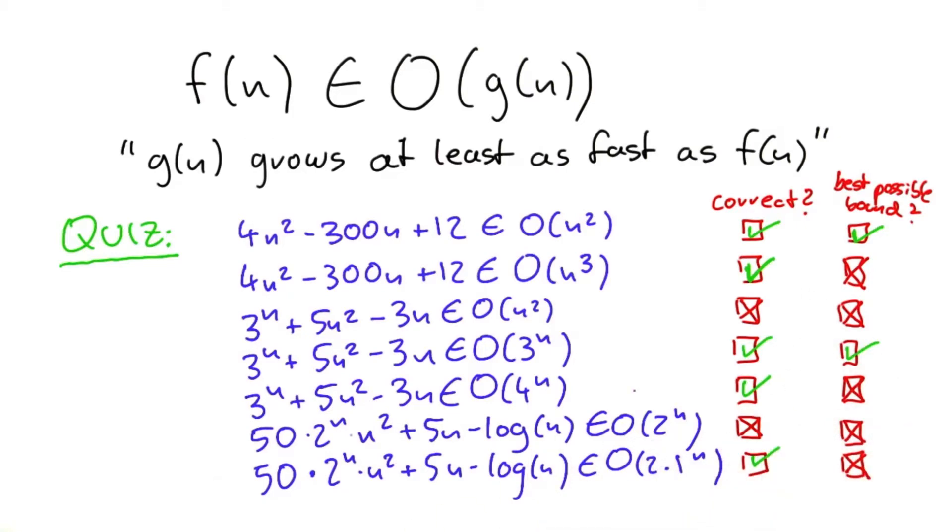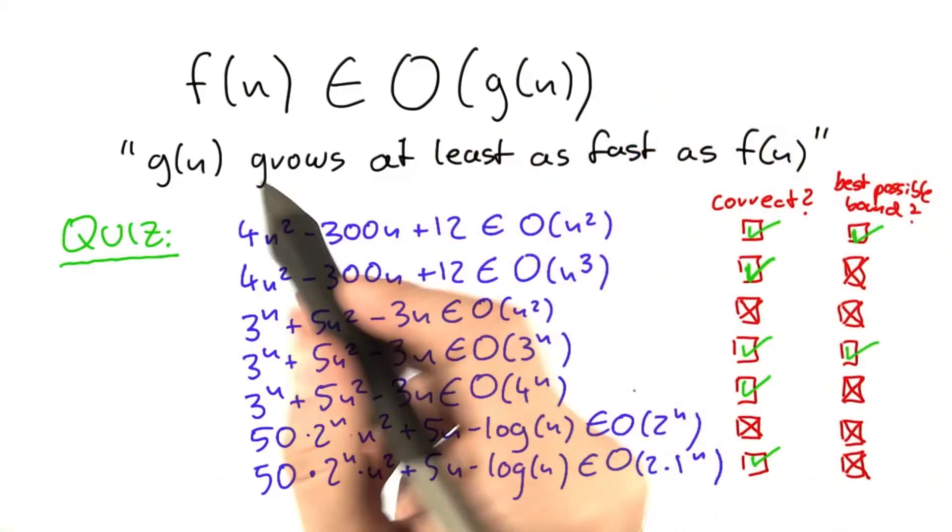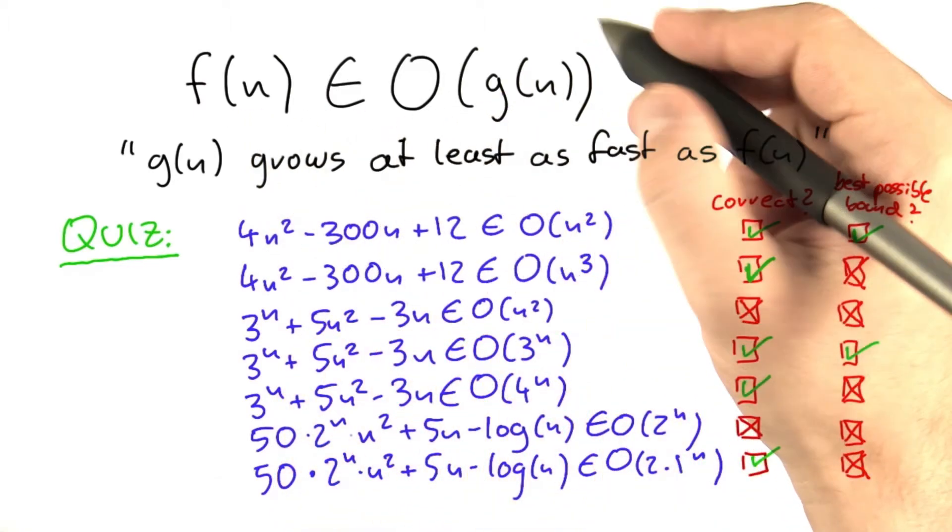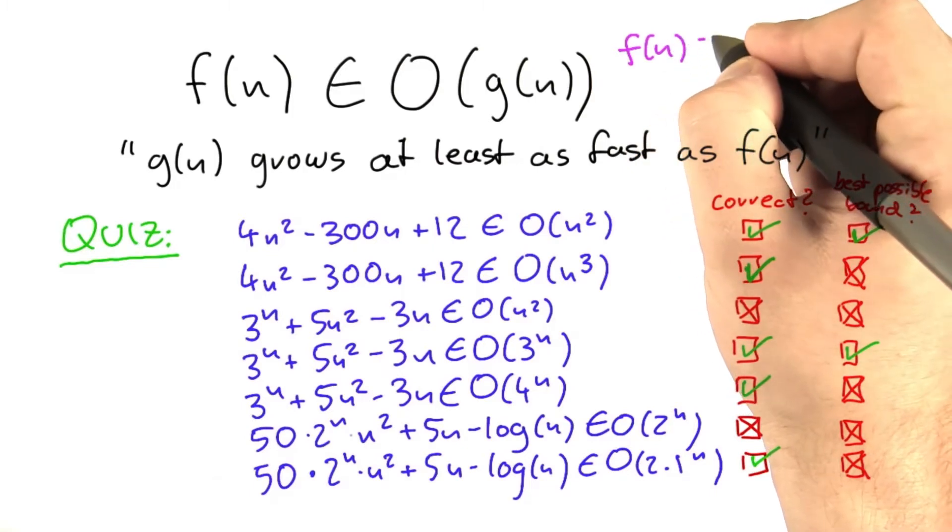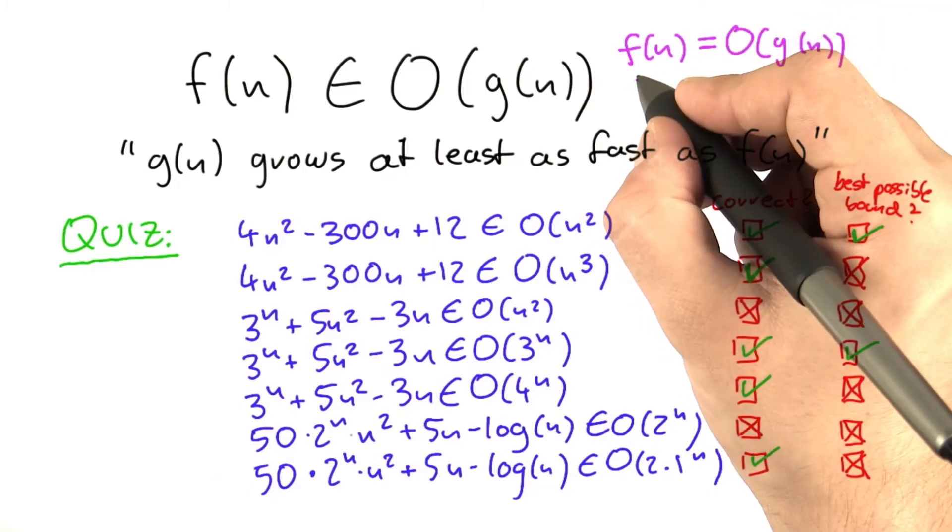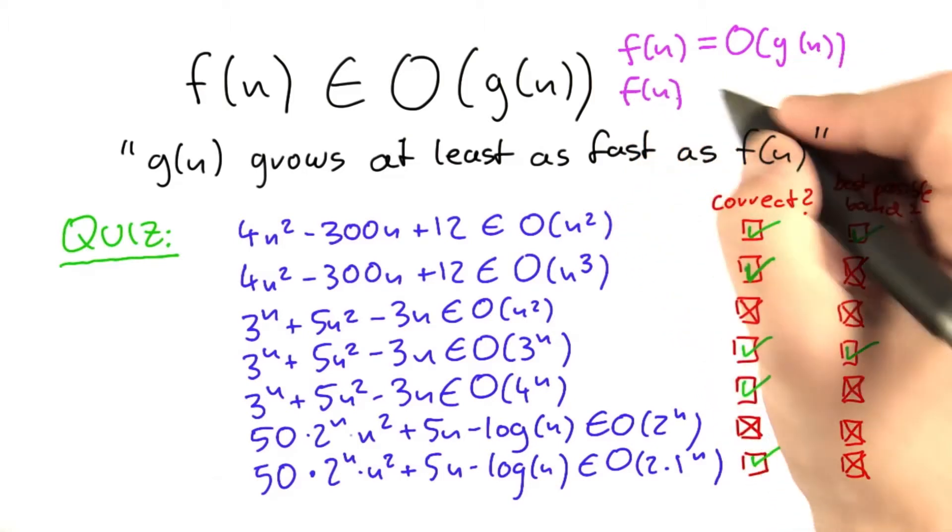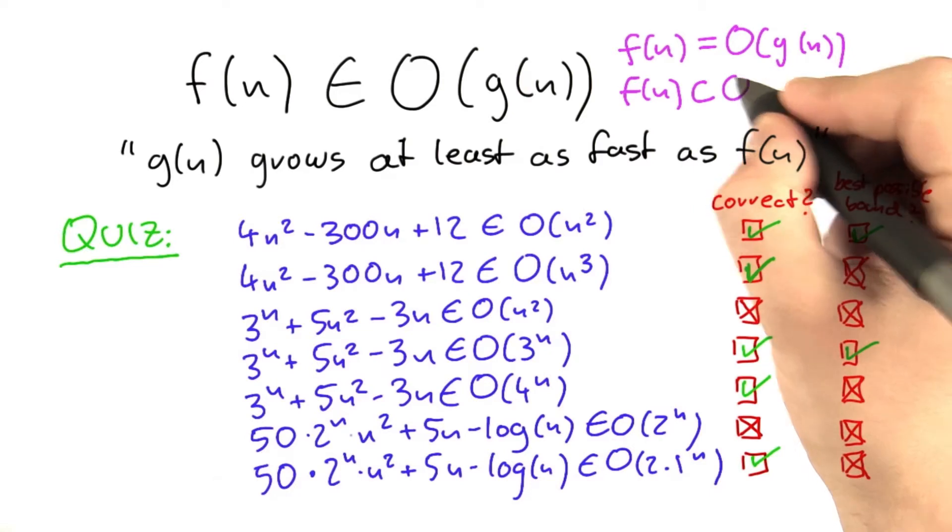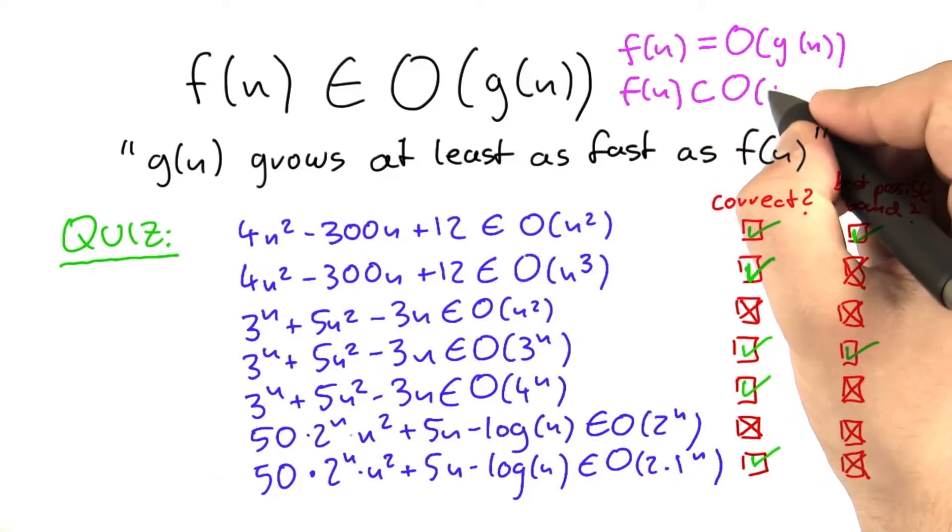Now there's one final note I should make. Some people, instead of writing f of n is contained in O of g of n, also write f of n is equal to O of g of n. And sometimes, but this is not very common, people will also write it as if it were a subset. So they would use this symbol here and say subset contained in O of g of n.